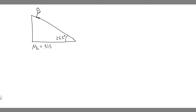In this problem, we're told a child goes down a playground slide that is inclined at an angle of 26.5 degrees below the horizontal. Find the acceleration of the child given that the coefficient of kinetic friction between the child and the slide is 0.315.